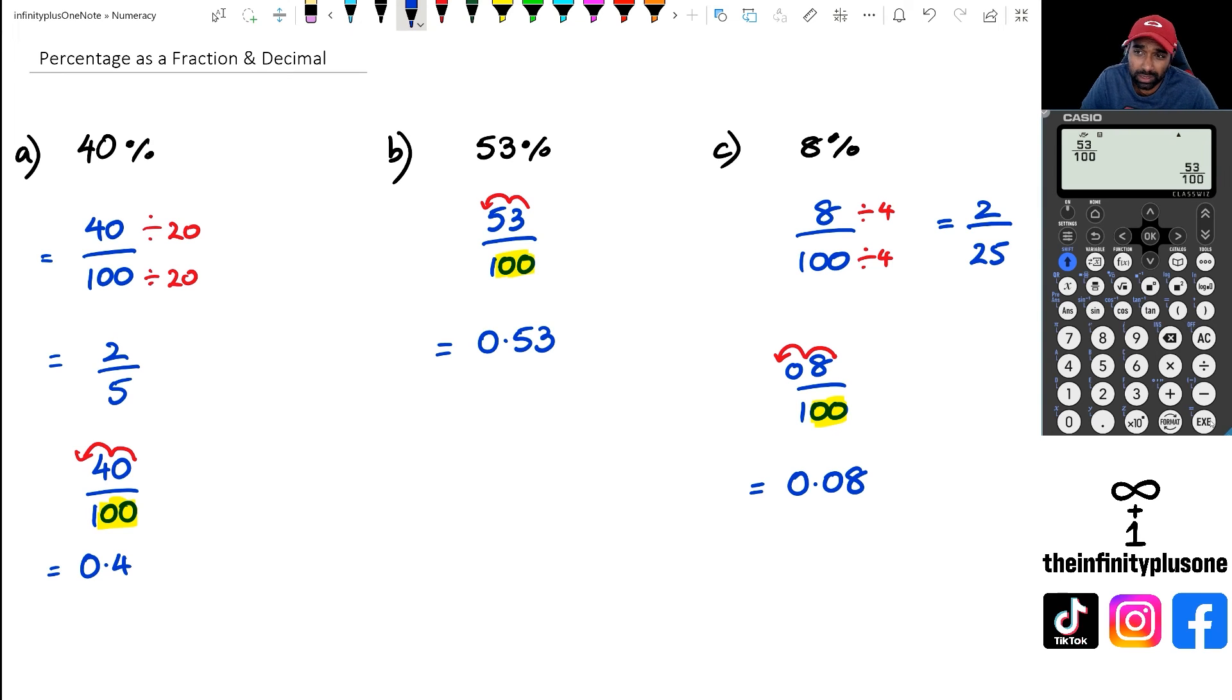So just a quick recap, anytime you want to change a percentage to a fraction you divide by 100, anytime you want to do percentage as a decimal you divide by 100. Because look at 53, if we take 53 over 100 as a fraction it's 53 over 100, but if I go shift and exe it gives me 0.53 as a decimal. Likewise if I take 8 over 100, when I press equals I get 2 over 25 which is the simplified fraction, but if I do shift equals I end up with 0.08. So yeah, just keep that in mind anytime you're converting percentages to fractions or decimals that you need to divide by 100.